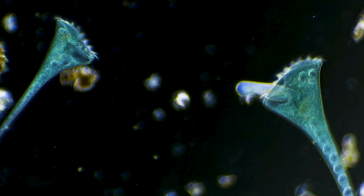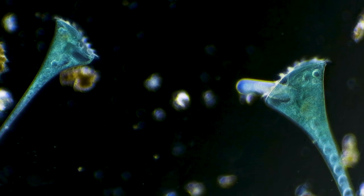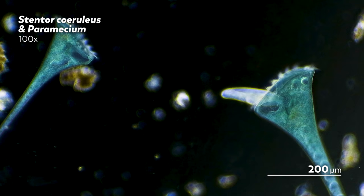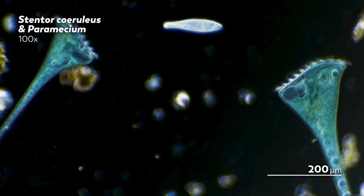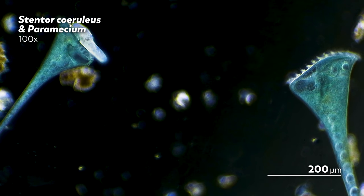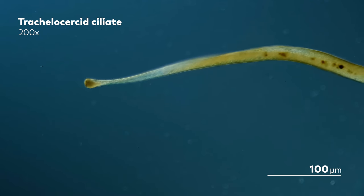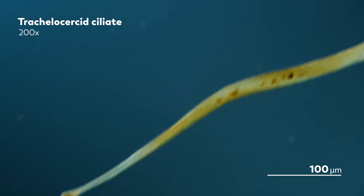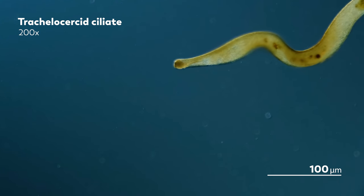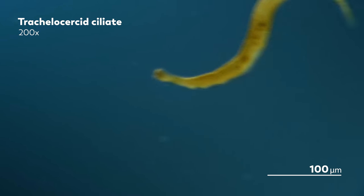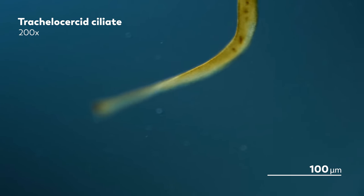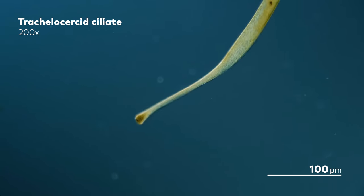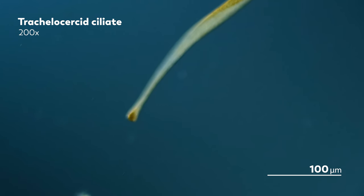Some of the ciliates we find in the microcosmos have a sort of stoutness to them, like the declarative trumpet shape of the stentor or the oblong of the paramecium. But then you have this little weird fellow, which looks more like a twisty, slithering worm than a unicellular organism. This is a trichelocercid.